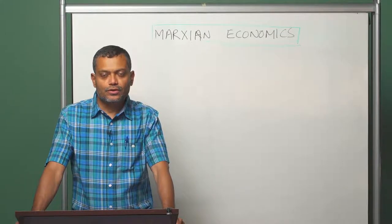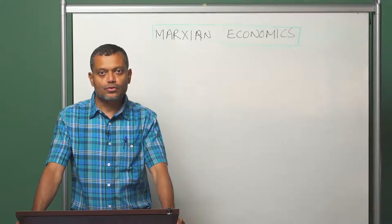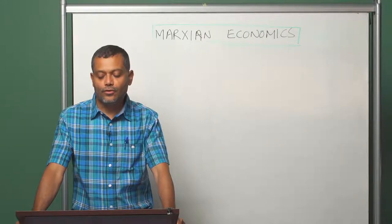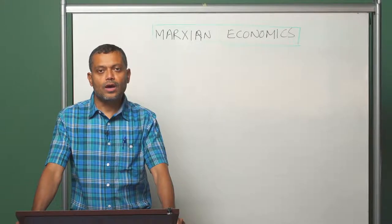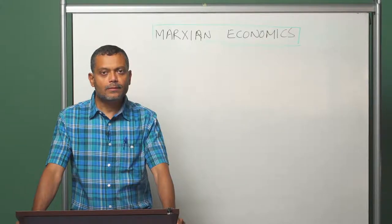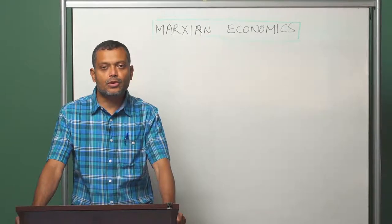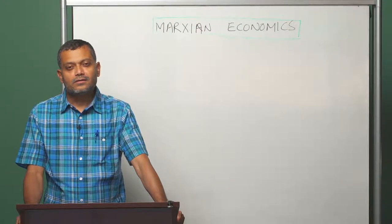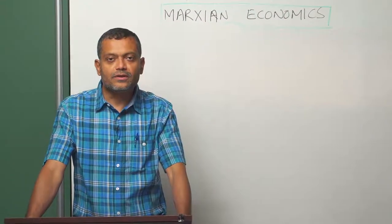Welcome back. This is Dipankar Basu in the Department of Economics at UMass Amherst, and you are listening to the course Marx in Economics, Econ 305. In the previous two modules we have gone through the arguments in Volume 1 and Volume 2 of Capital. Volume 1 helped us understand processes related to the generation of surplus value and its accumulation. Volume 2 helped us understand issues related to the realization of value. Now we must delve into the argument in Volume 3, which is about the distribution of surplus value.